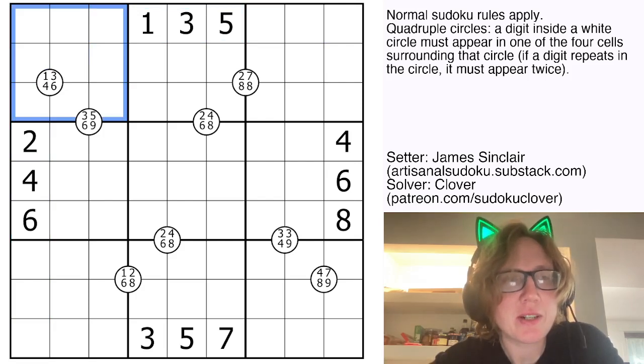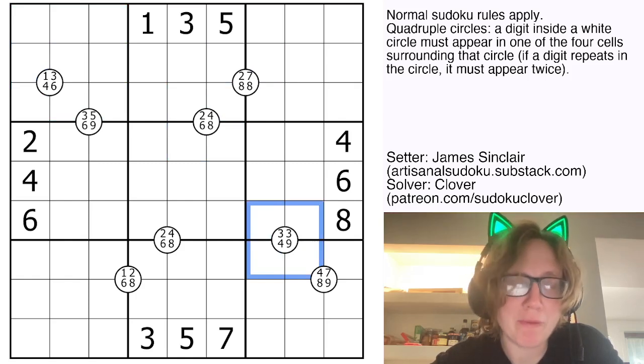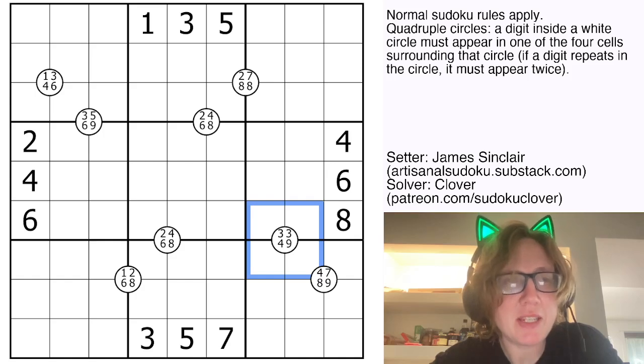And then in addition there are also quadruples clues in the grid. These clues that have four numbers surrounding the corner of four cells in a white dot tell you four digits that have to appear somewhere in those four cells.